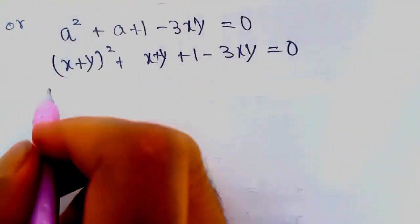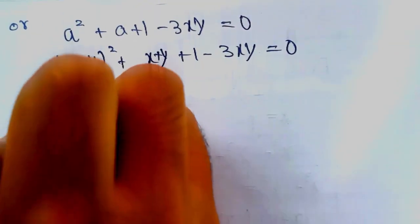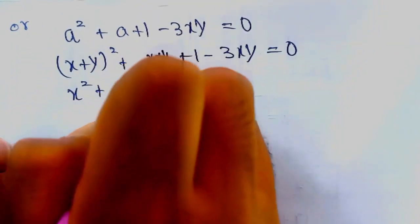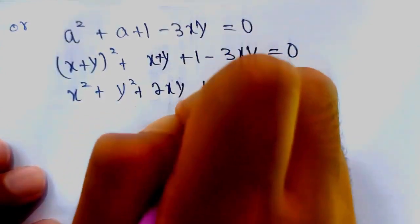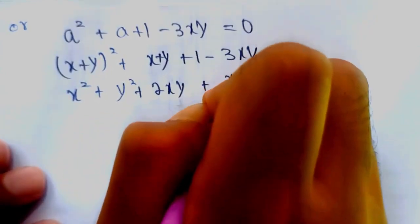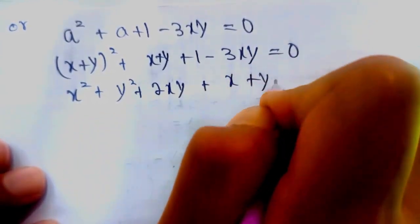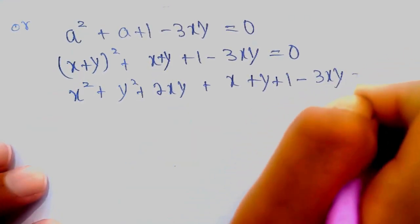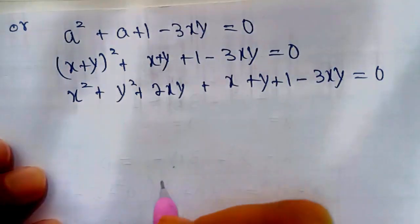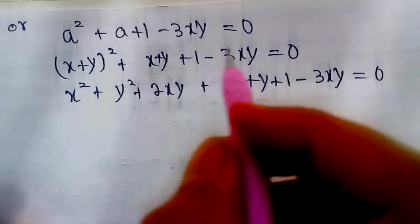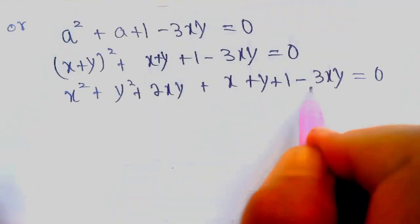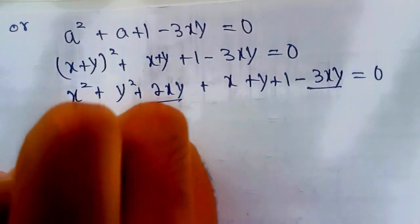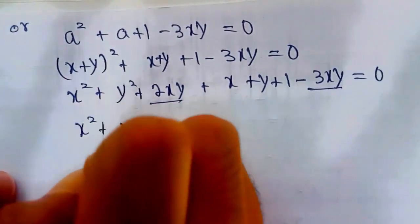Expanding (x + y)²: x² + y² + 2xy + x + y + 1 - 3xy = 0. Combining the xy terms, -3xy + 2xy = -xy, so we have x² + y² - xy + x + y + 1 = 0.